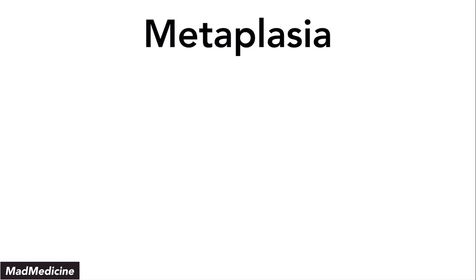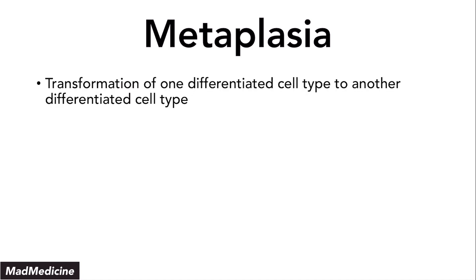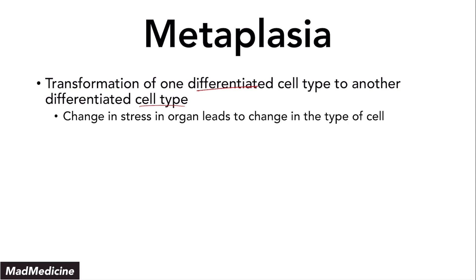Metaplasia is the growth adaptation that occurs where, when you change the type of stress, our cells are going to transform from one differentiated cell type to another differentiated cell type. That happens because of this change in stress of an organ that leads to changing the type of cell — this is all because of the change in the type of stress.